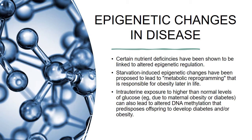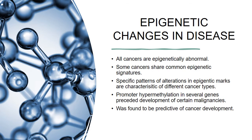Starvation-induced epigenetic changes have been proposed to lead to metabolic reprogramming that is responsible for obesity later in life. Intrauterine exposure to higher than normal levels of glucose, for example due to maternal obesity or diabetes, can also lead to altered DNA methylation that predisposes offspring to develop diabetes and/or obesity. All cancers are epigenetically abnormal, and some cancers share common epigenetic signatures. Specific patterns of alterations in epigenetic marks are characteristic of different cancer types. Promoter hypermethylation in several genes preceded development of certain malignancies, and this was found to be predictive of cancer development.